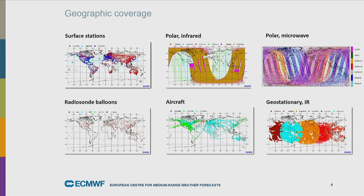We also use radiosonde balloons. There are not that many of them - about 600 - and they are only launched twice per day at midnight and 12 noon GMT. They are mainly in the northern hemisphere over land areas, but they are really a backbone of the observing system, providing in-situ information of the basic variables needed to initialize our forecasts. Even if the amount of data is limited relative to other sources, it is absolutely vital that we can use these radiosondes and that they continue to exist.